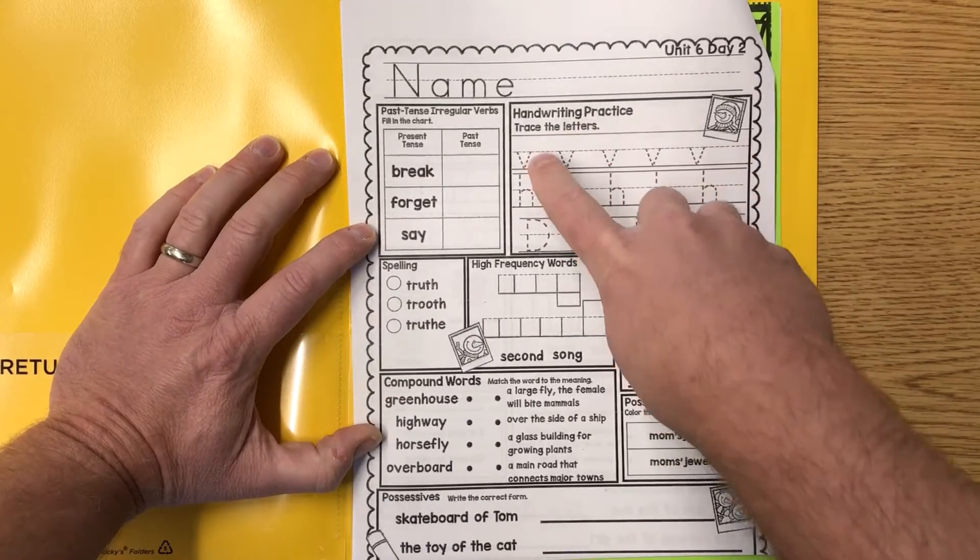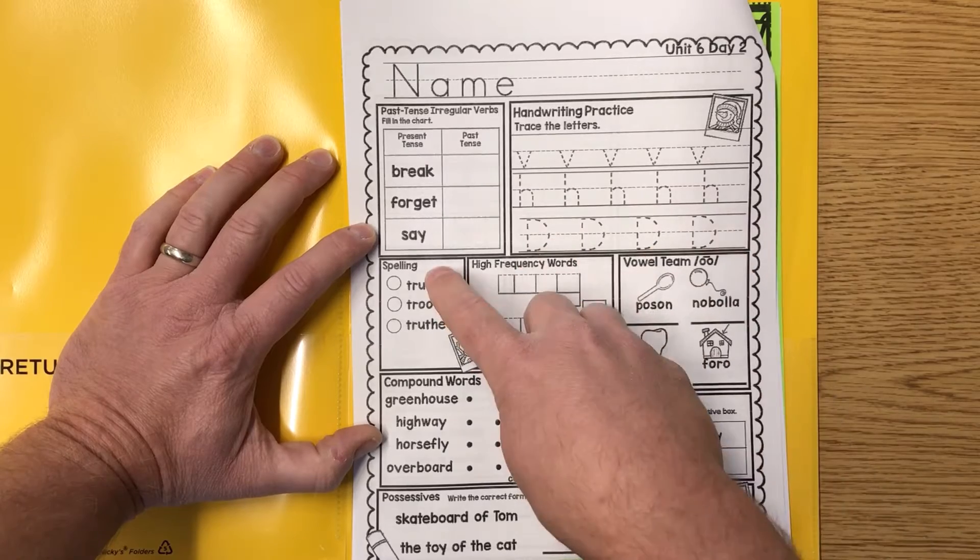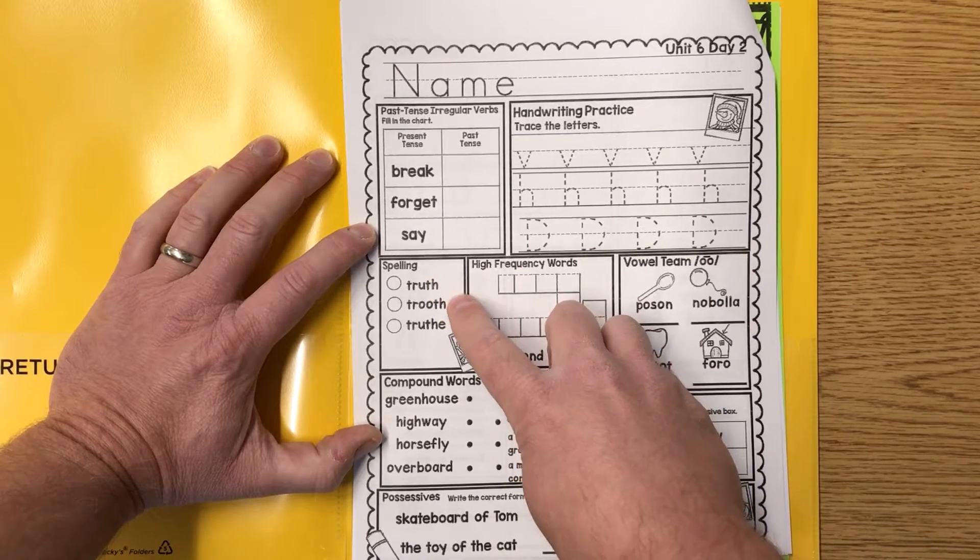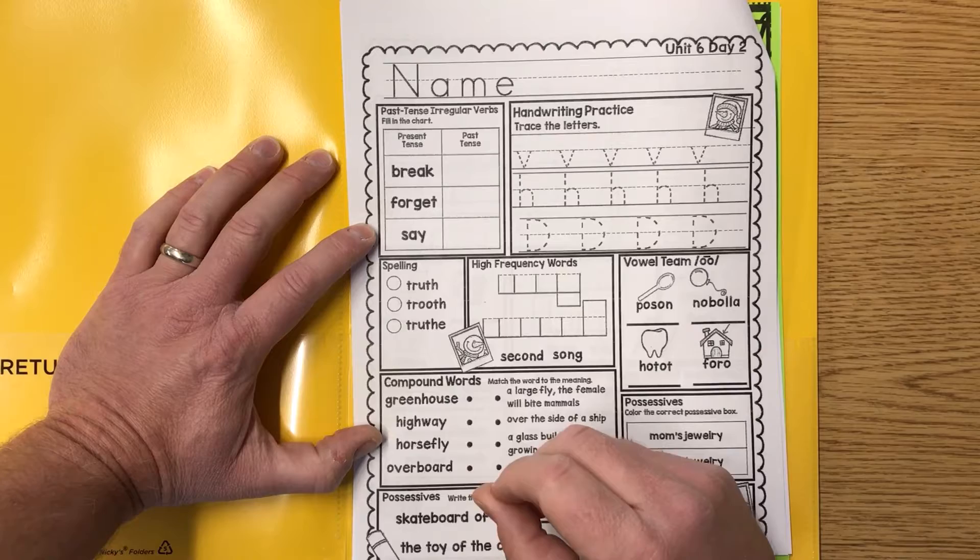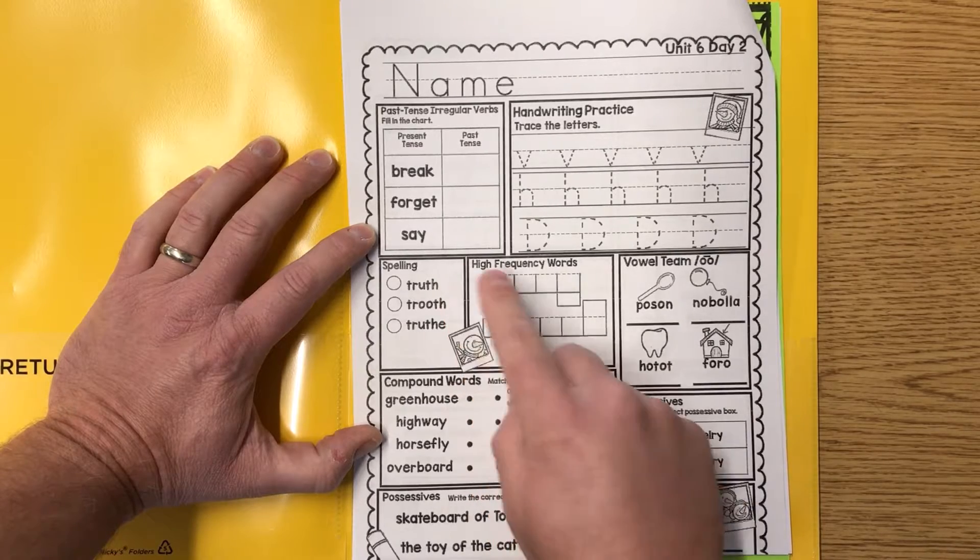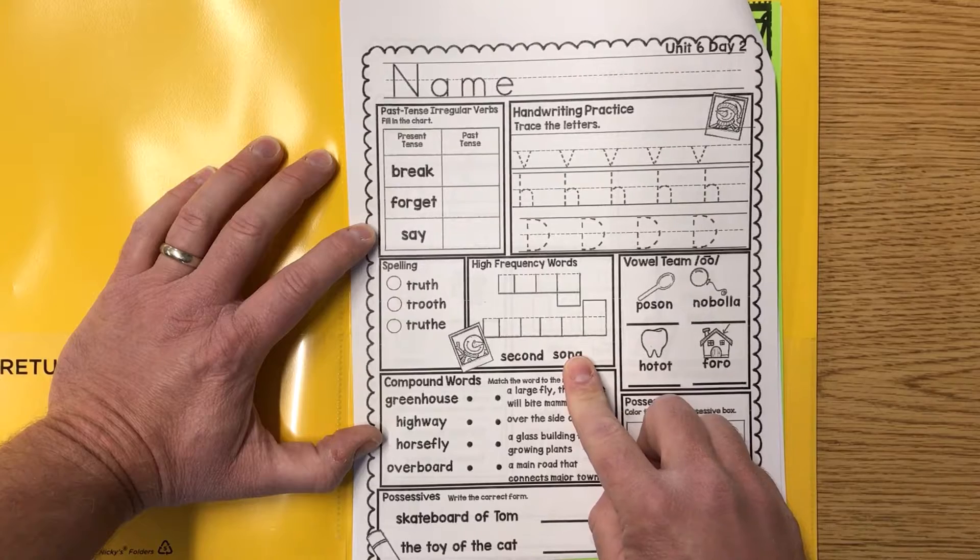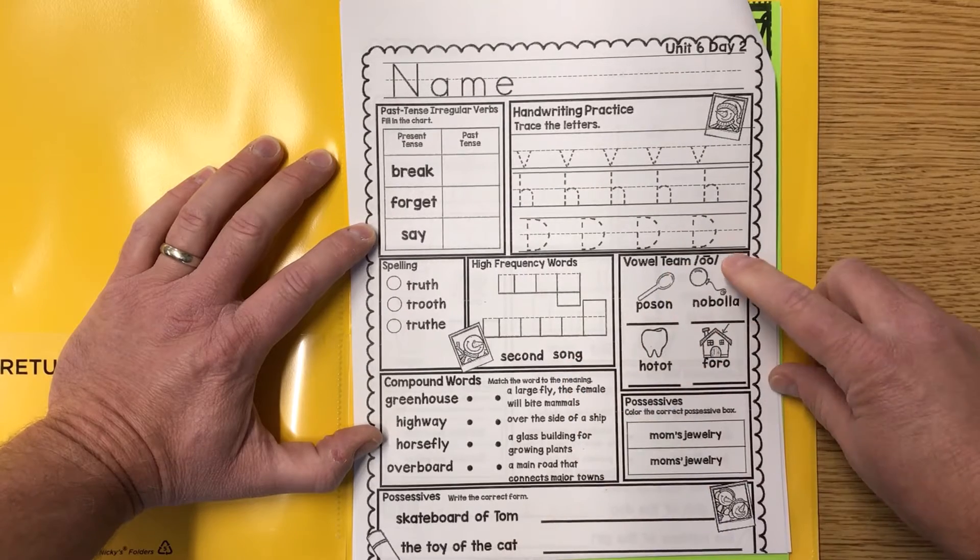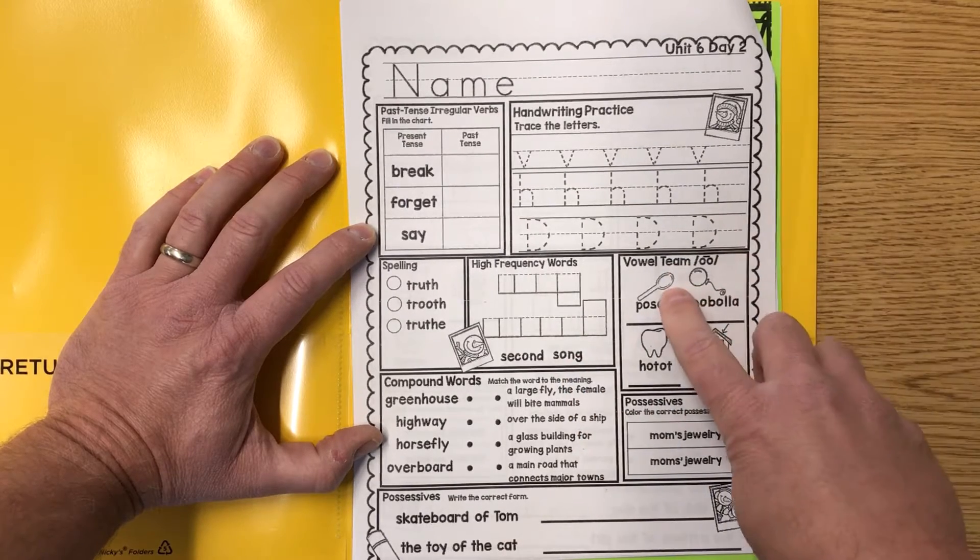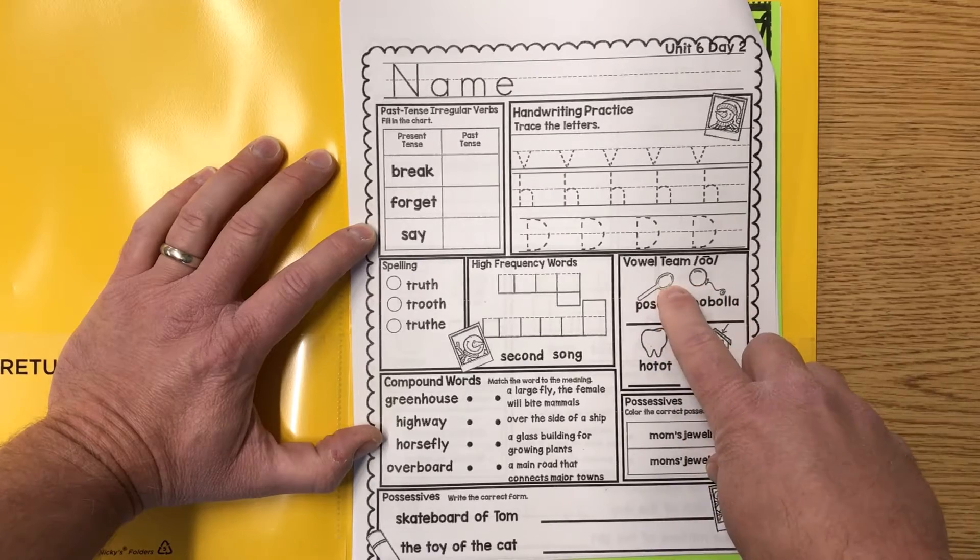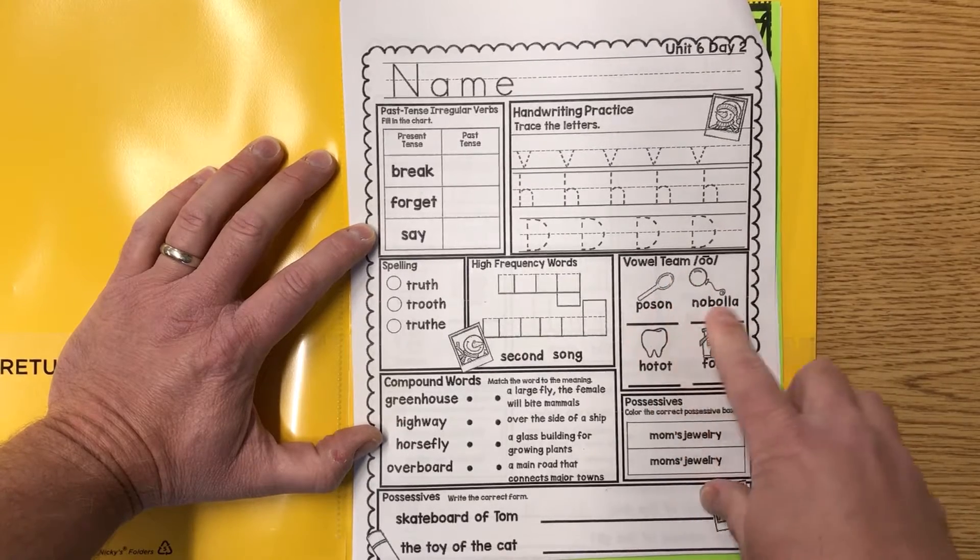Handwriting practice. Trace the letters for V, H, and capital D. Spelling. We have one way to write truth. Do you know which one it is? Truth. High frequency words for second and song. Vowel team for ooh. We have that. Hmm, is that a spoon? See if you can figure out the other three.